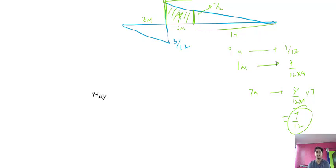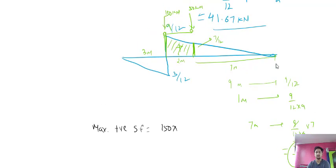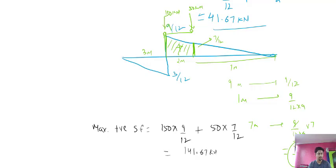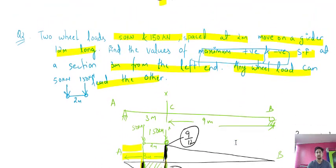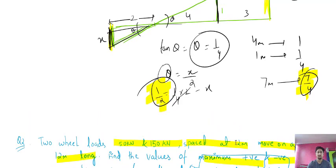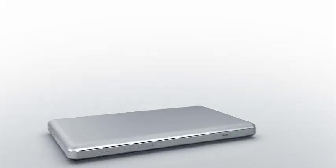The maximum positive shear force = 150 × (9/12) + 50 × (7/12) = 141.67 kN. This is how you solve numericals based on ILD. For today this much is enough — try these numericals and more will be sent. Thank you very much.